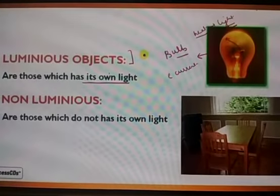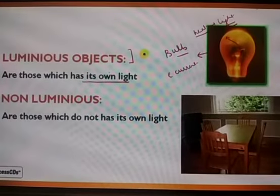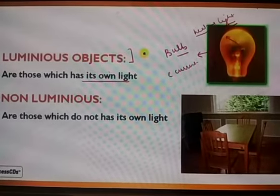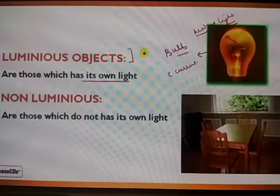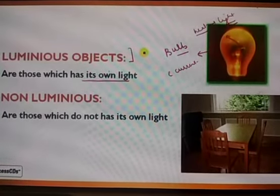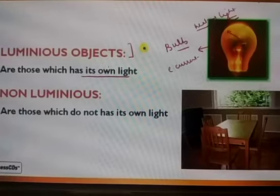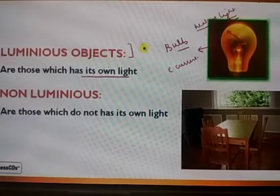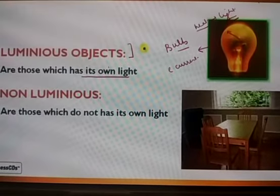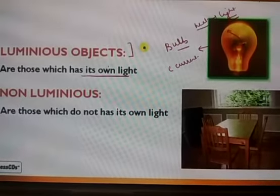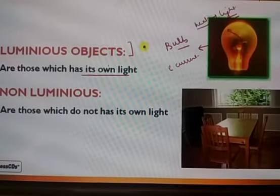So what are luminous objects and non-luminous objects? Luminous means those which have their own light. Which has its own light is known as luminous — for example, the sun. Those are luminous objects. Which do not have their own light are non-luminous objects — for example, chair, desk, everything comes under non-luminous objects.